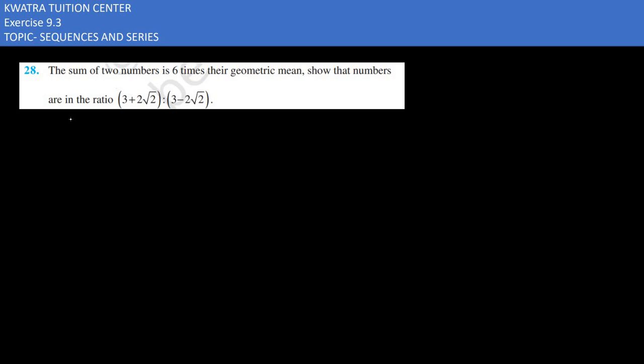Here we are told that there are two numbers. Let's say that one is a and another is b, and a+b is equal to six times their geometric mean. Geometric mean is nothing but √(ab), so a+b = 6√(ab).